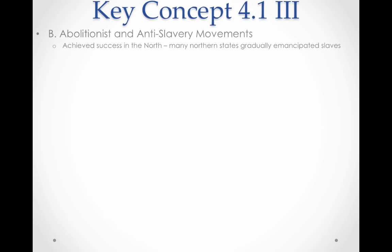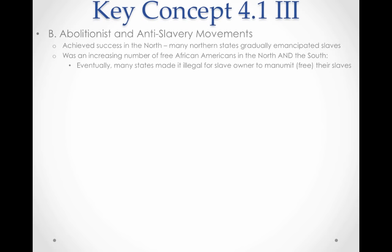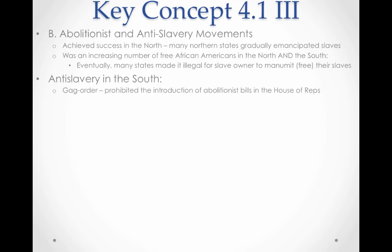Abolitionists achieved much of their success in the North, where many states gradually emancipated their slaves. By the early to mid-1800s, slavery essentially did not exist in the North, and there was an increasing number of free African Americans both North and South. Eventually many Southern states made it illegal for slave owners to manumit or free their slaves — particularly in Virginia after 1831. On the national level, the gag order in the House of Representatives, instituted by the South, prohibited the introduction of abolitionist bills and was eventually overturned by John Quincy Adams.